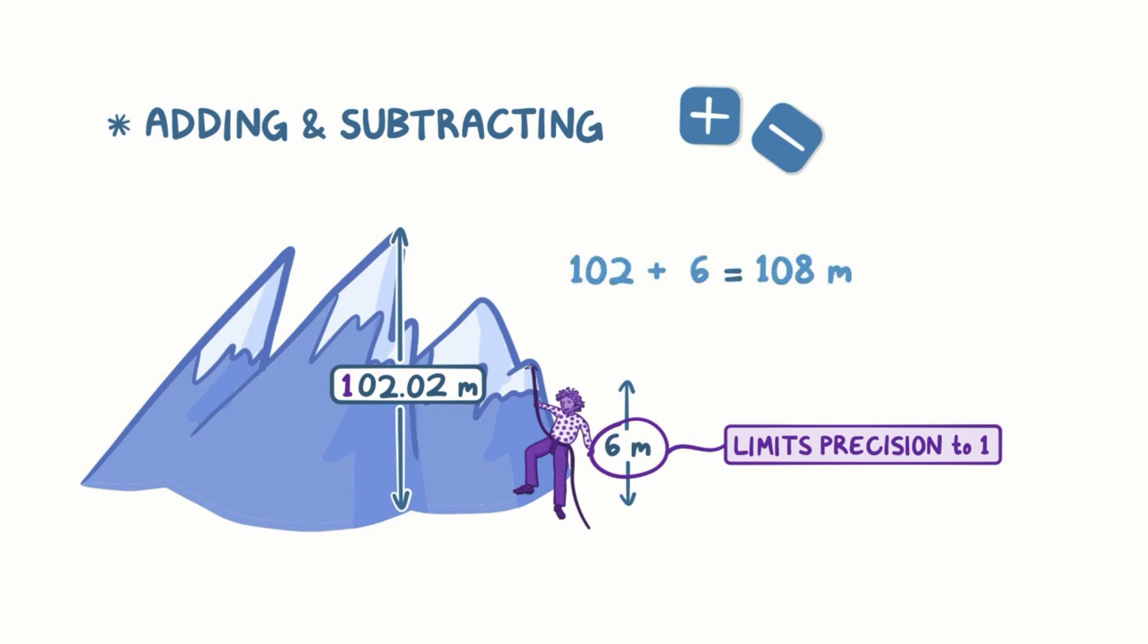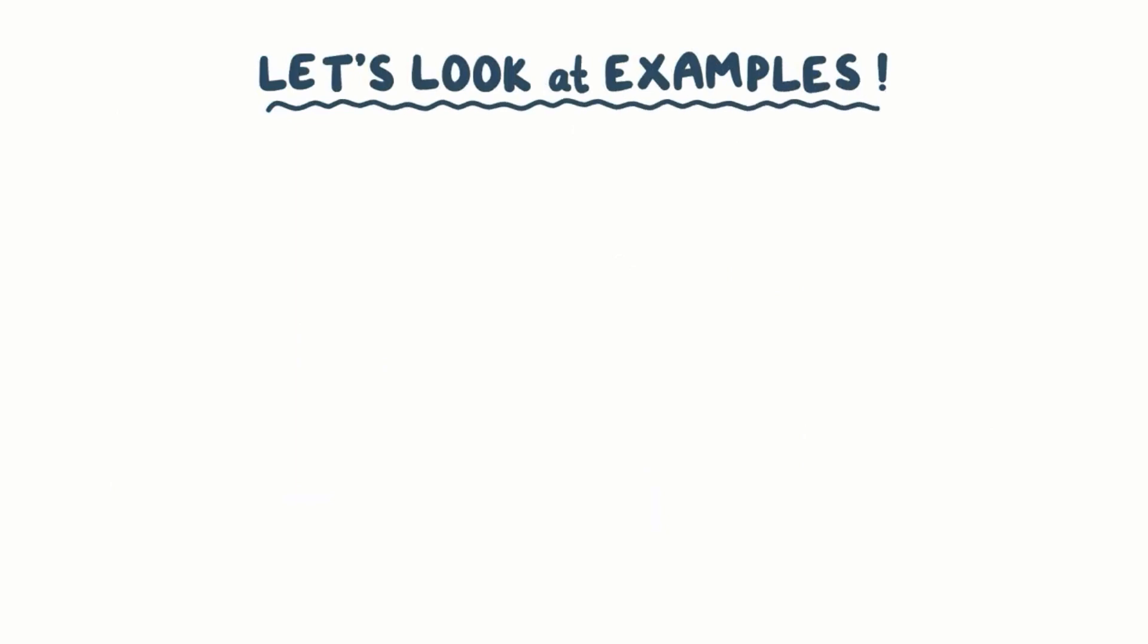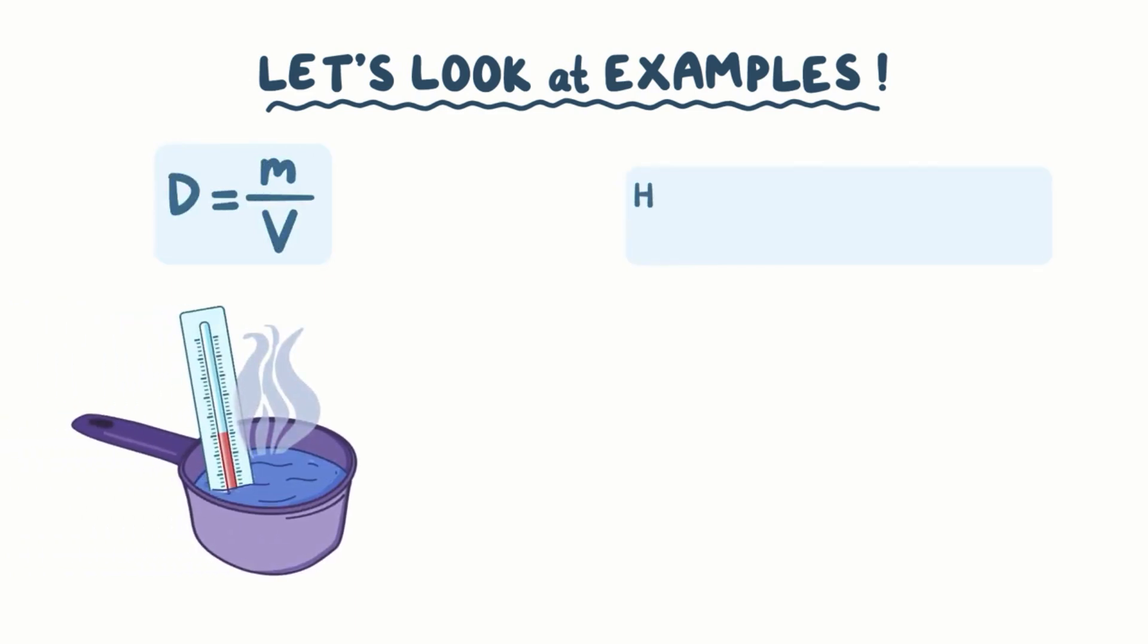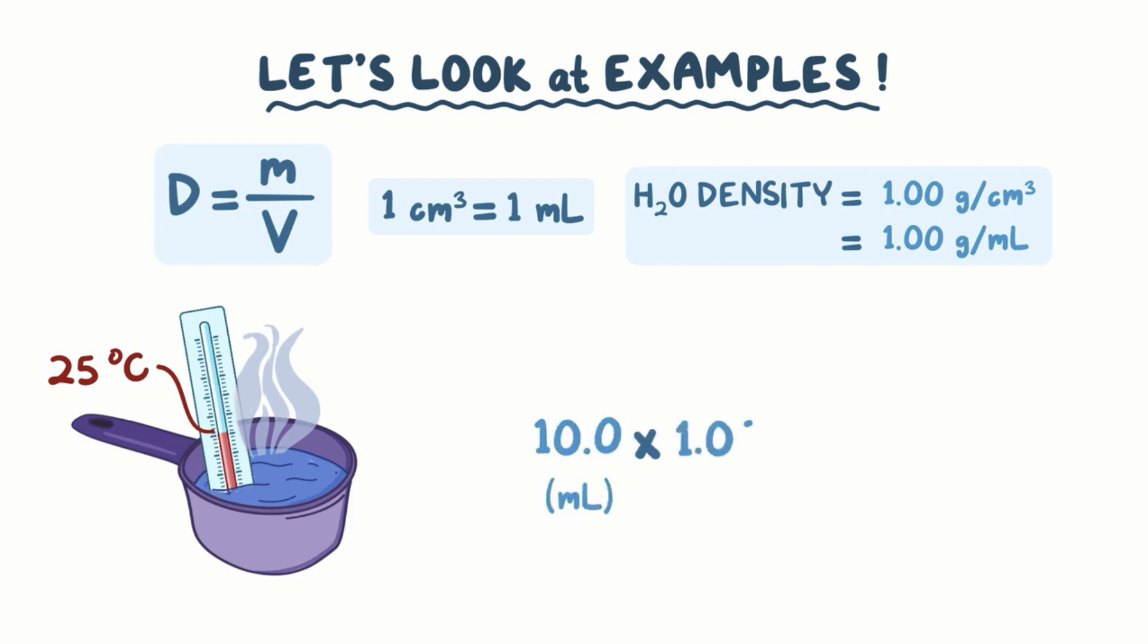Now that we know how to combine significant figures in calculations, let's check out an example of how we'd use significant figures when performing a real-world measurement. Density equals mass divided by volume. For example, water has a density of 1.00 grams per centimeter cubed at 25 degrees Celsius. Since 1 centimeter cubed equals 1 milliliter, you can also say that water has a density of 1.00 gram per milliliter. So going back to our formula, if we have 10.0 milliliters of water, then multiplying 1.00 grams per milliliter and 10.0 milliliters gives us 10.0 grams of water. 10.0 milliliters of water has 3 significant figures, and 1.00 grams per milliliter has 3. So our final answer of 10.0 grams should also have 3 significant figures.